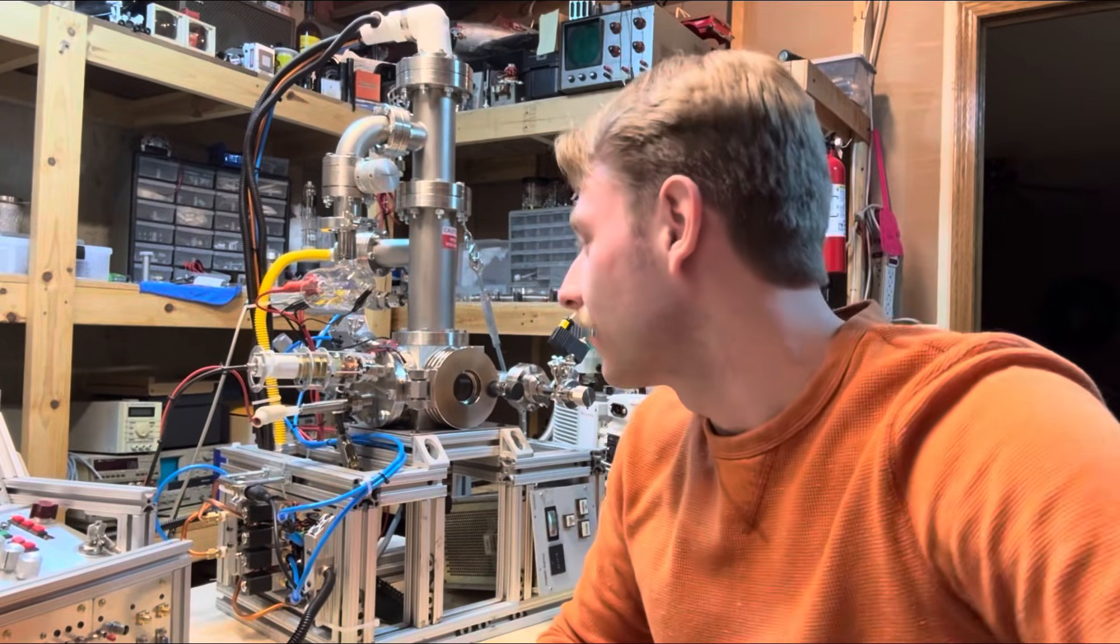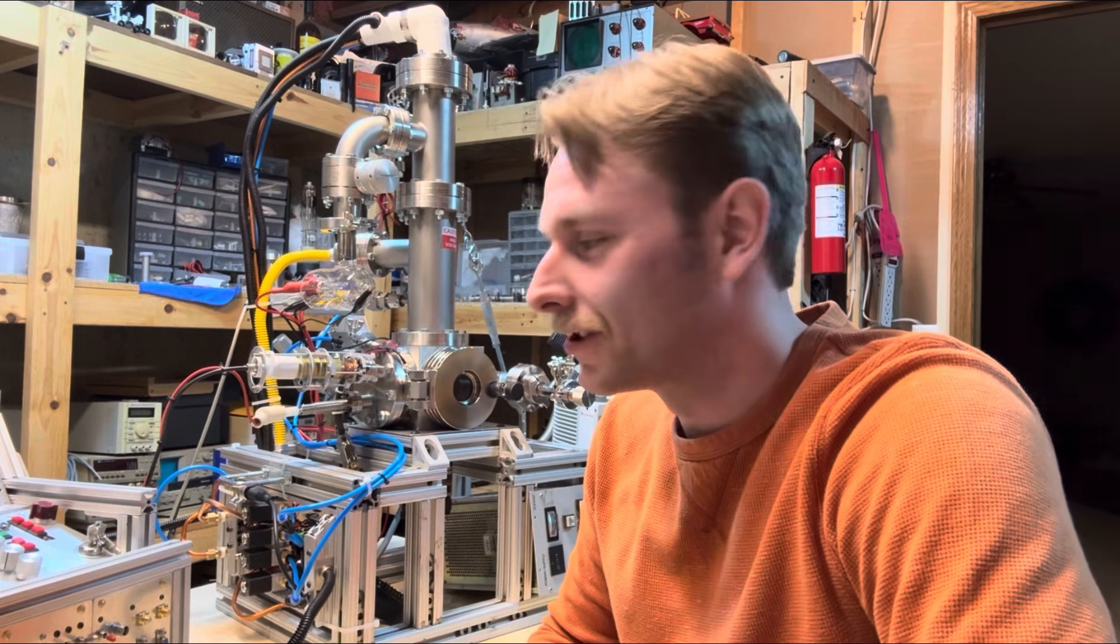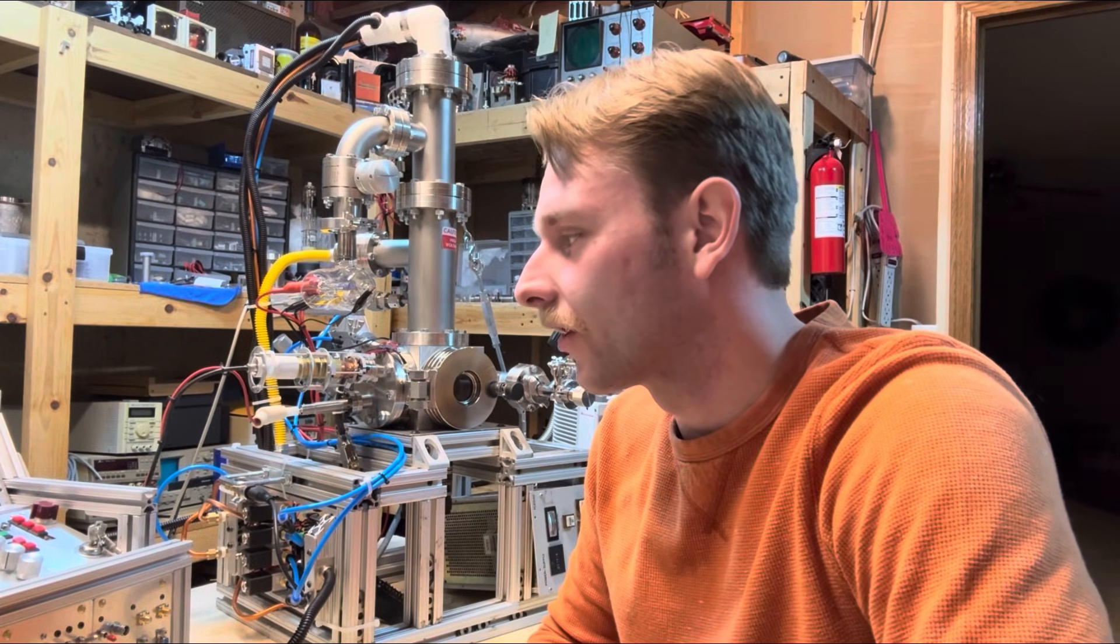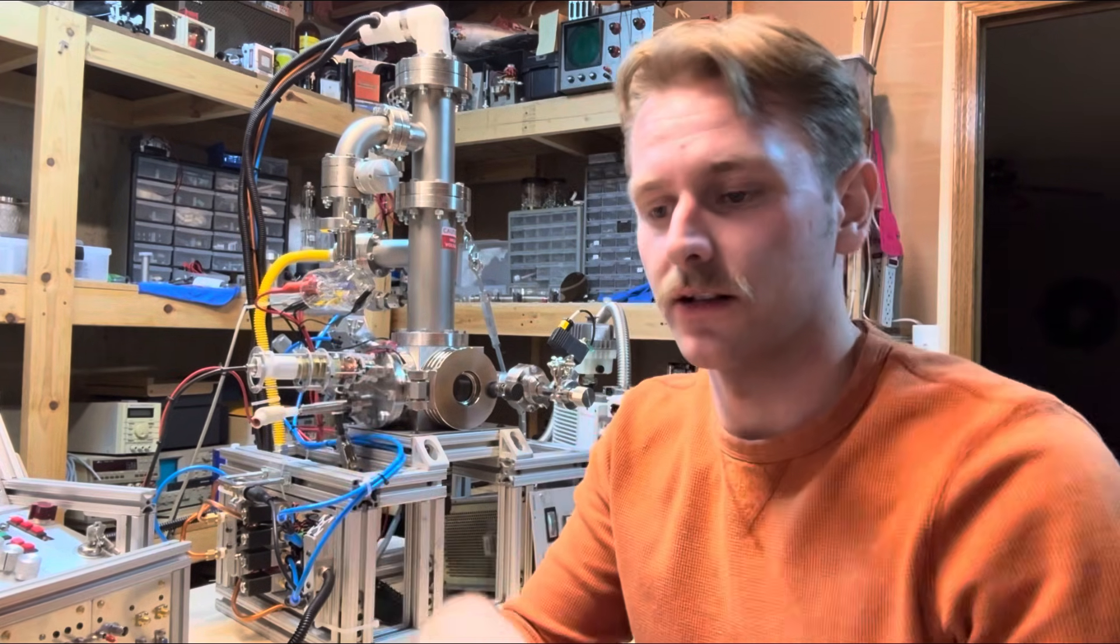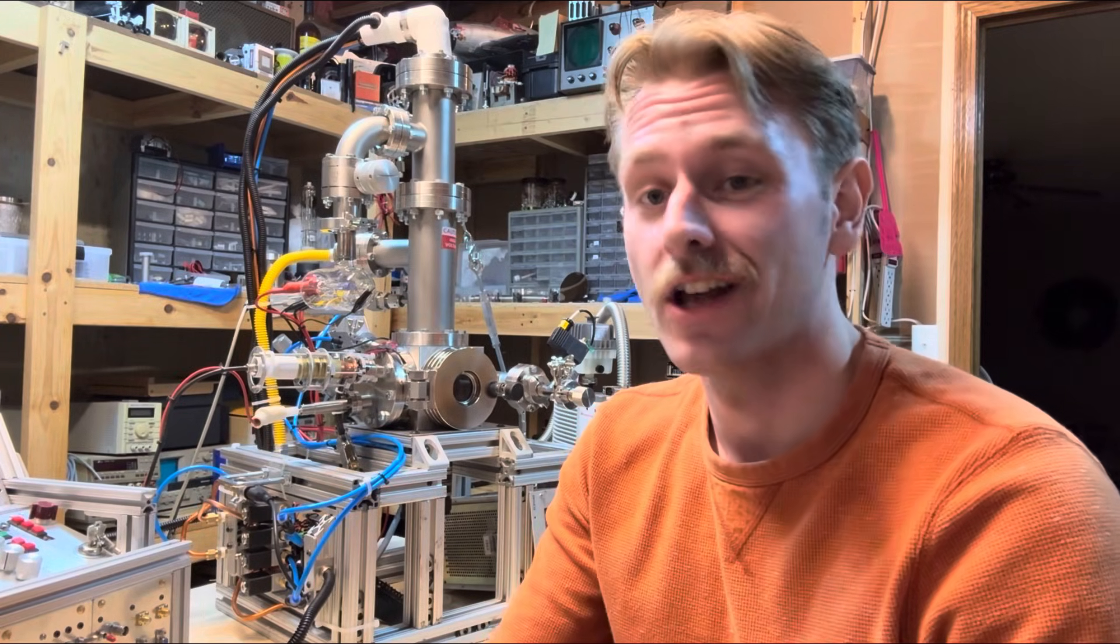It's like a tube that you would have in an old guitar amplifier. And that measures the current. Because there's going to be less things bumping into the electrons traveling across. And you're like, oh, I know that's 10 to the negative 9 torr. Because there's like this many electrons. That's what the electronics in there are doing.